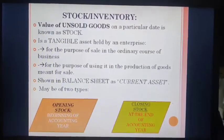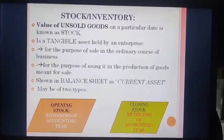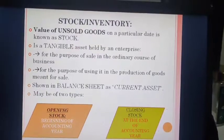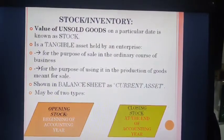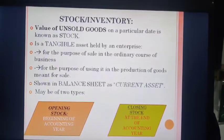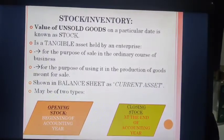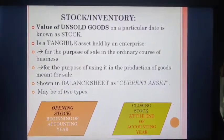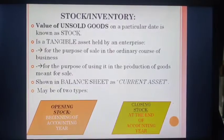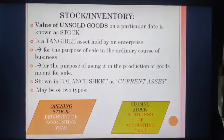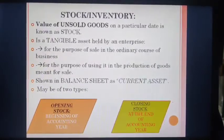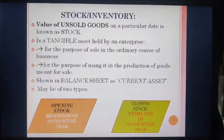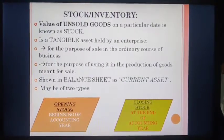The next term is stock, also known as inventory. Stock inventory is different from goods — it is basically a part of goods only. The value of unsold goods on a particular date is known as stock. It is a tangible asset held by an enterprise for the purpose of sale in the ordinary course of business, or for use in the production of goods meant for sale.